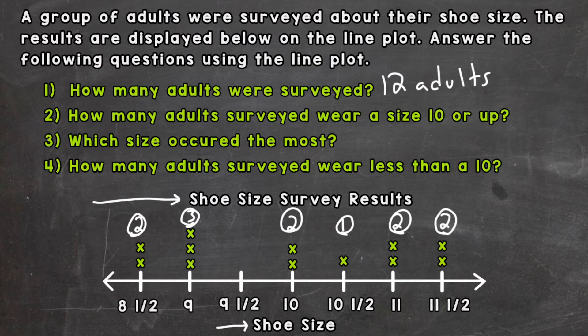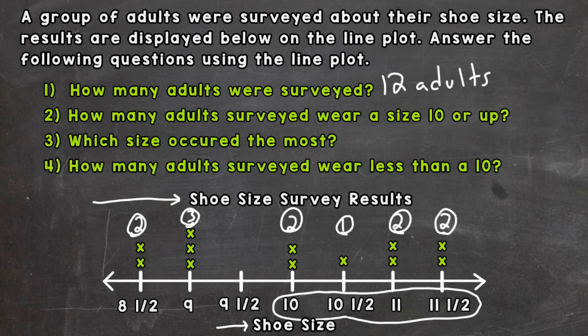Number two: how many adults surveyed were a size ten or up? We need to include size ten and look at all the sizes above it. Counting that portion of the line plot: two, three, five, seven. Seven adults were size ten or up.